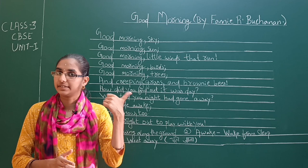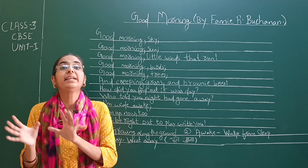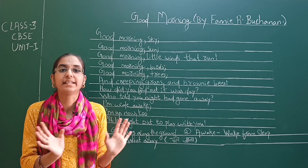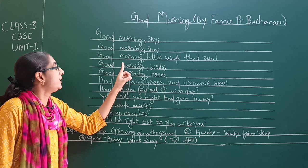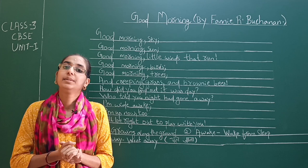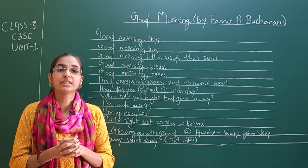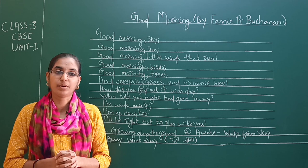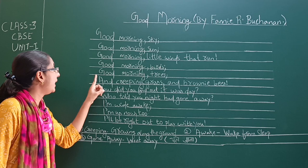पहले लड़की sky को good morning बोलती है, फिर sun को good morning बोलती है. अभी जितनी भी ठंडी हवा बह रही है, लड़की उसको good morning winds बोल रही है. Good morning birds — हमारे आसपास बहुत सारे पक्षी हैं, लड़की उन पक्षियों को good morning birds बोल रही है. Good morning trees — हमारे आसपास बहुत जादा पेड़ हैं, लड़की trees को भी wish कर रही है.